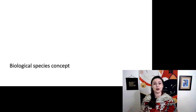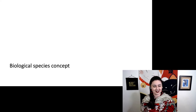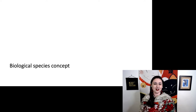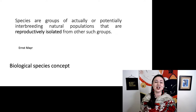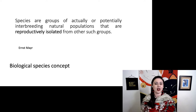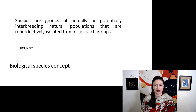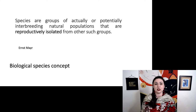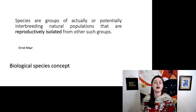By far the most popular one is the biological species concept. However, it is not more or less biological than any other concept — this is just success in marketing. This concept was championed by Ernst Mayr. It defines species as groups of actually or potentially interbreeding natural populations that are reproductively isolated from other such groups. The key here is we are focusing on reproductive isolation — can you prove two populations are reproductively isolated? If so, they are different species.